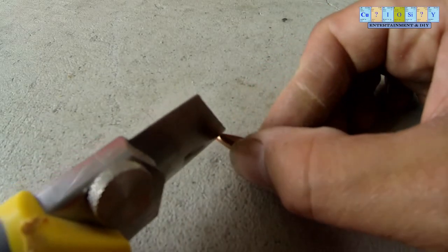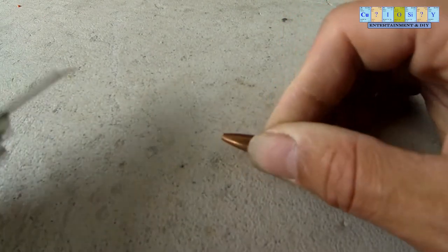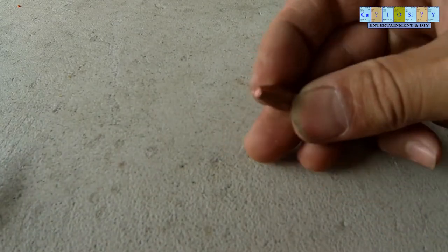First thing you want to do is cut off the plastic tip using a sharp knife. After cutting it you'll end up with a flat tip like that.